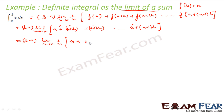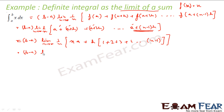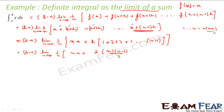So this is n times a common, plus h into — if you see it starts with 1, 2, 3, 4, dot dot dot till n minus 1. Please note it is n minus 1, not n, because the last term is a plus n minus 1 times h. Using the AP formula, 1 plus 2 plus ... plus n minus 1 equals n into n minus 1 by 2. So this becomes b minus a, limit n tends to infinity, 1 by n, into n times a plus h into n times n minus 1 by 2.